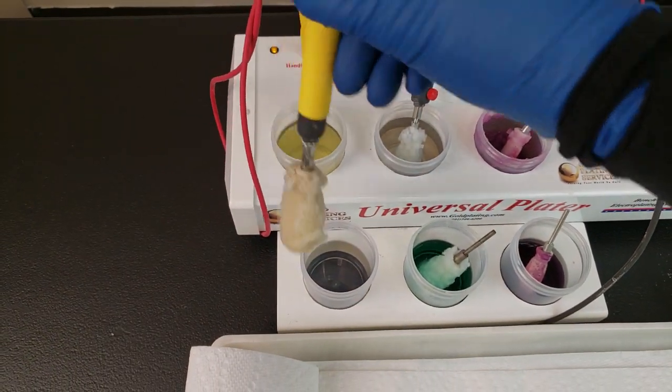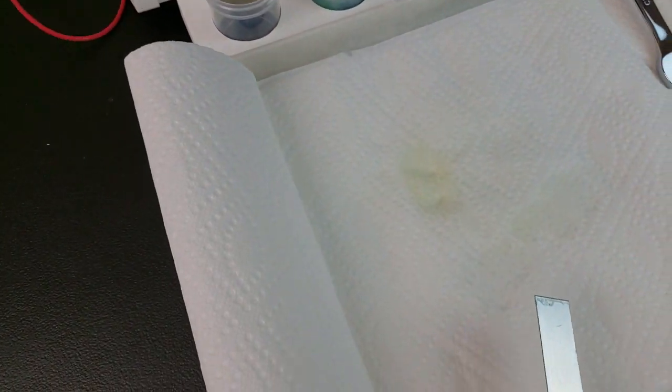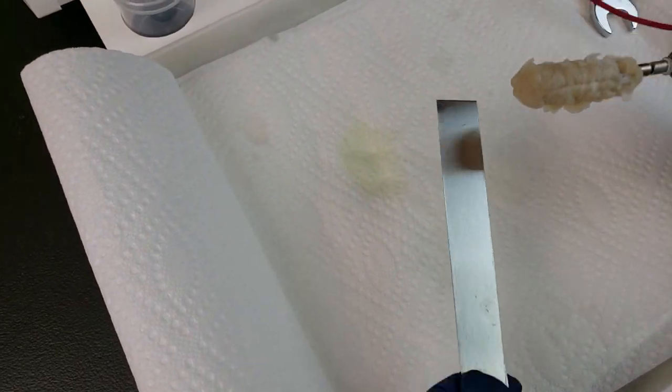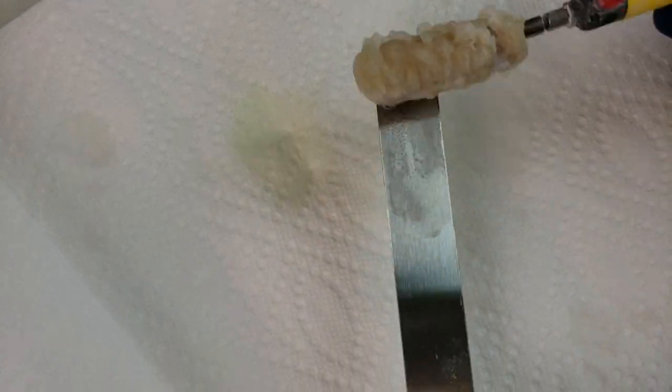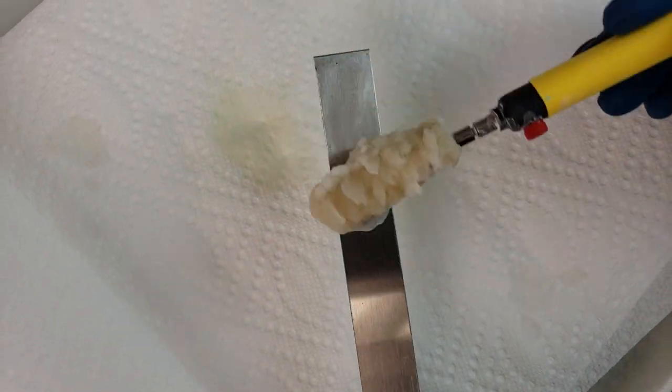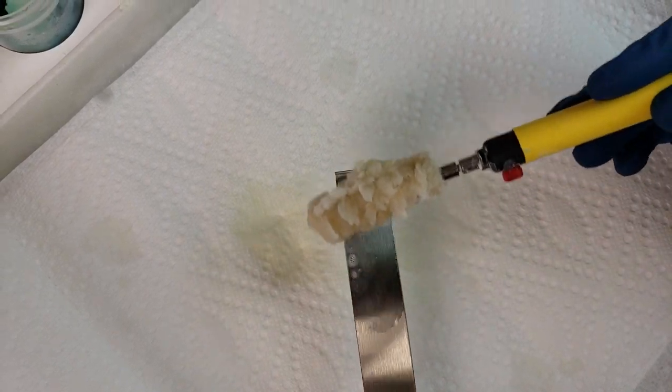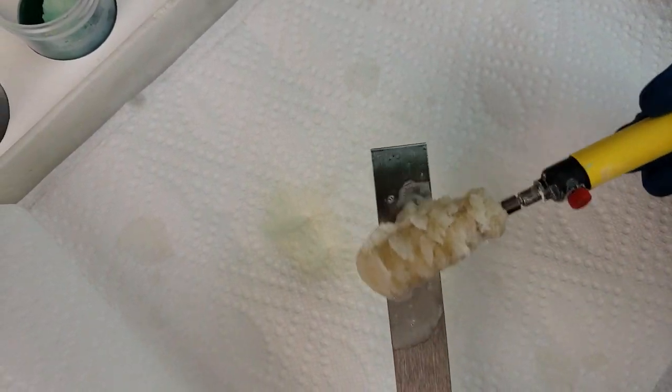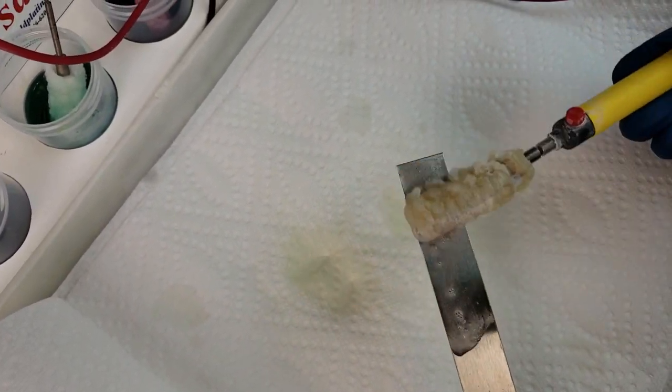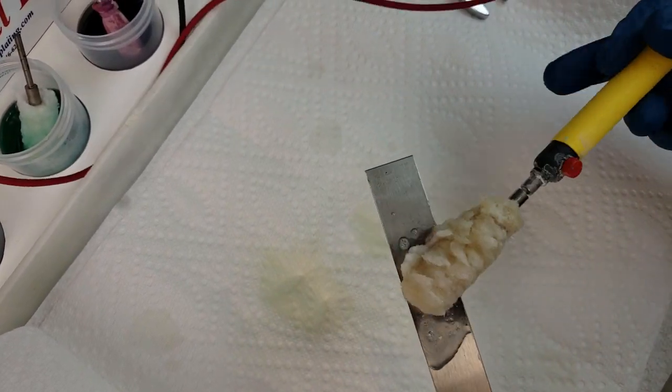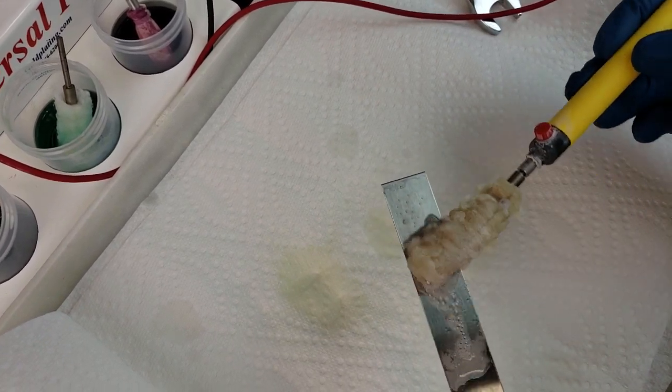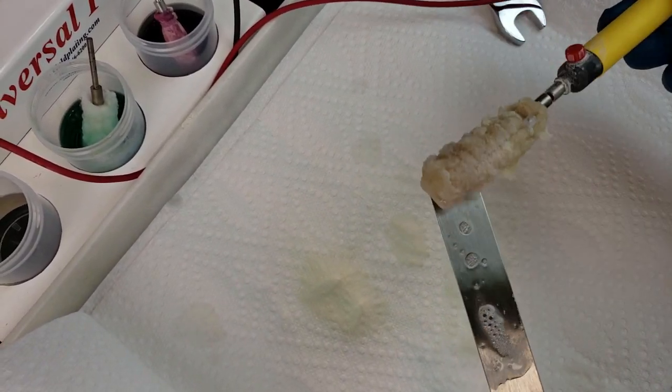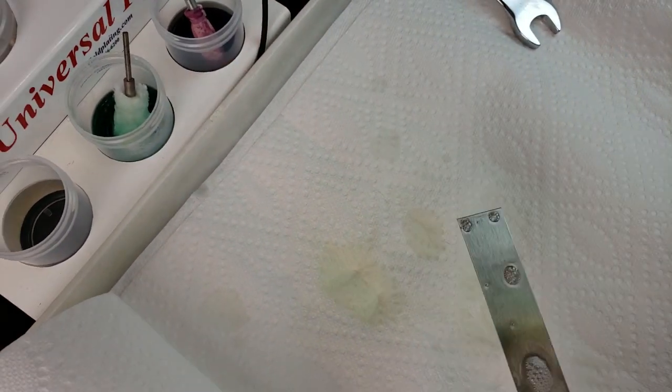What you're looking for is if it's chrome. If you've ever done chrome, the solution turns yellow and the piece starts to turn a bronze tan color. As you can see here, nothing is happening except bubbling. And so that right there immediately would tell me okay, this item is not chrome because if it were it would be turning yellow and stripping.